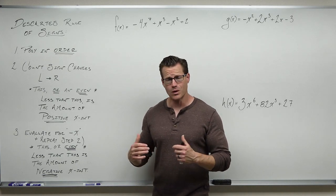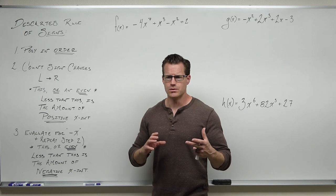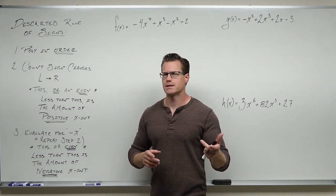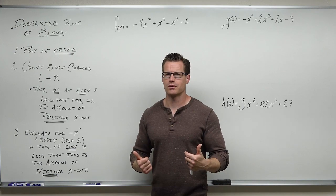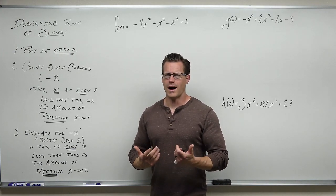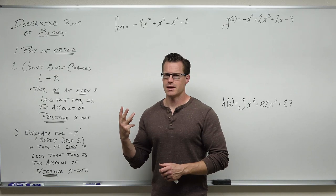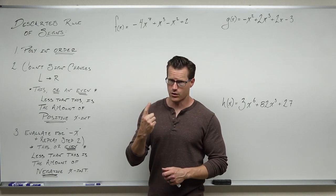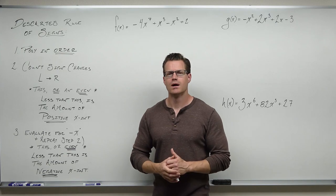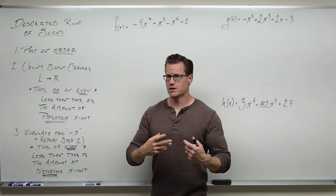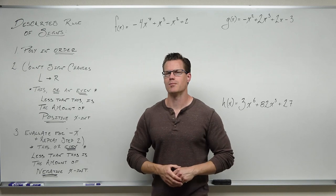So we're going to get right into Descartes' rule of signs. I'm not going to prove it, but I will tell you the idea behind it. As we go through it, I'm going to explain why you can have three positive x-intercepts or one, but not two and not zero — or two or zero, but not one or three. Why it decreases by an even number.